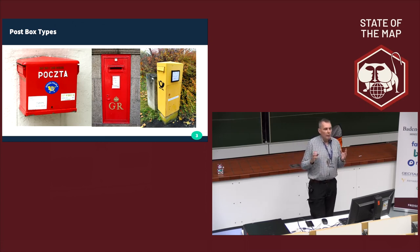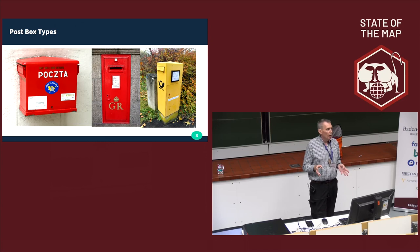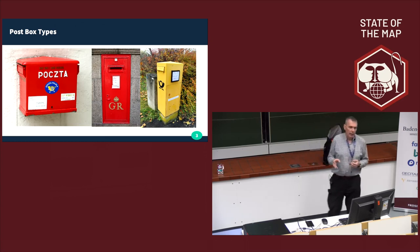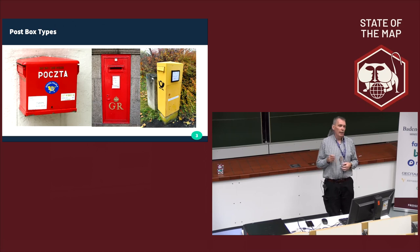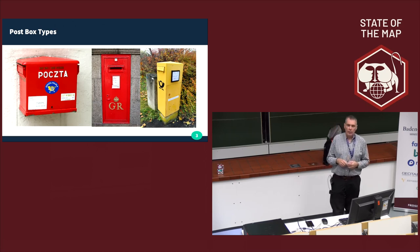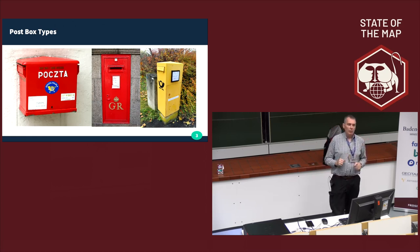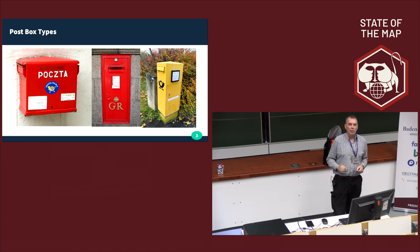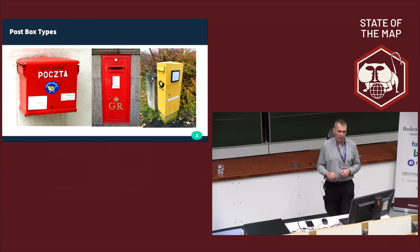The next kind of tagging is describing what kind of post box. Typically we have three kinds: here I've got a Polish lamp box attached to a wall, a wall box which is mounted in the wall so you only have a plate, and a German pillar box.